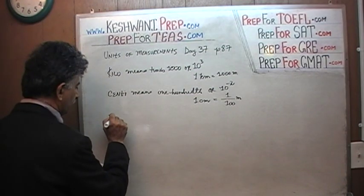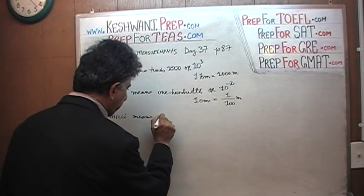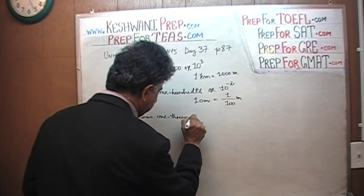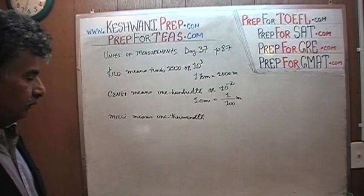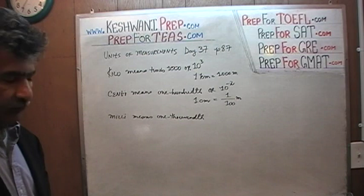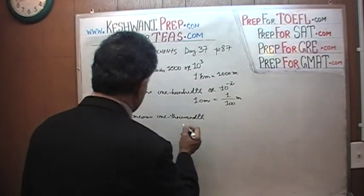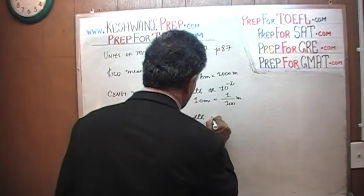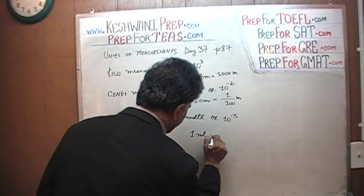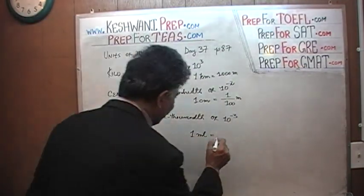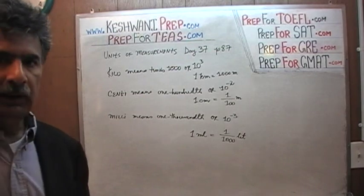What does Milli mean? Milli means one thousandth. These are very basic things — I know you know them. But it doesn't hurt to point them out so they are at the forefront of your mind. One one-thousandth, which is the same as 10 raised to negative 3. For example, if you are told one milliliter, one milliliter would be one thousandth of a liter. There are one thousand milliliters in one liter.